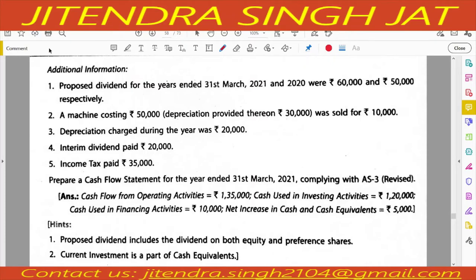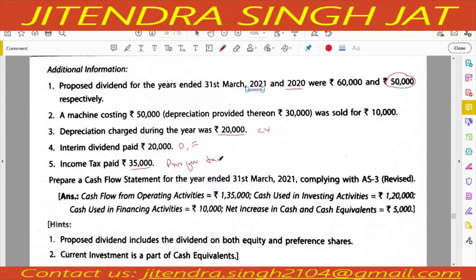Some additional information is also given. Proposed dividend for the years 2021 and 2020 are given, so we will take the previous year proposed dividend. A machine costing 50,000, depreciation 30,000, was sold for 10,000 - it means we need to prepare a machinery account. Depreciation charged during the year is 20,000 - this is your current year depreciation. Interim dividend paid 20,000 will be recorded in operating as well as financing activity. Income tax 35,000 paid means we need to prepare a provision for tax account.